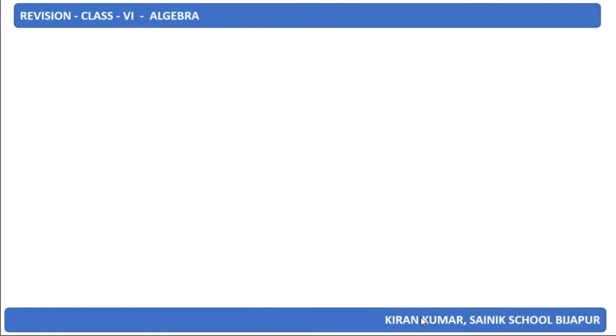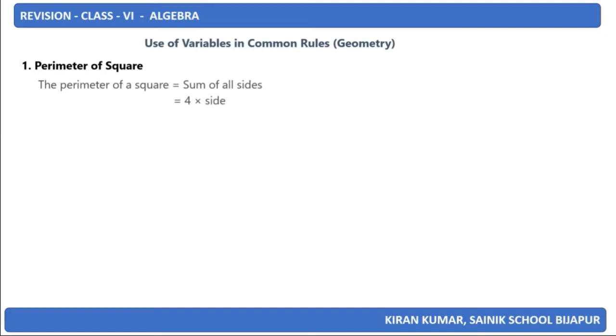Let us look into the use of variables in common rules, particularly in geometry. The perimeter of a square is the sum of all sides. We know there are 4 sides, so it's 4 times the side. If a side is represented using letter S, it becomes 4S. Thus, perimeter P=4S. Here S is a variable, so the perimeter changes as the value of the side changes.